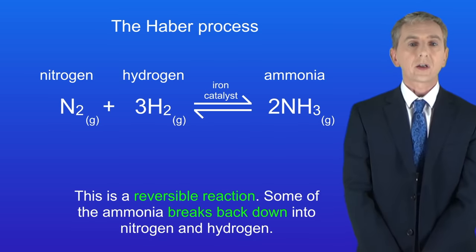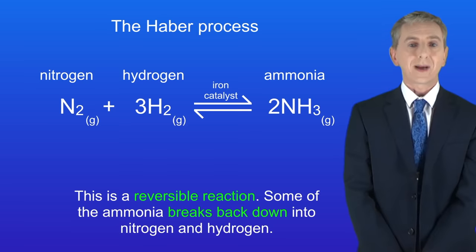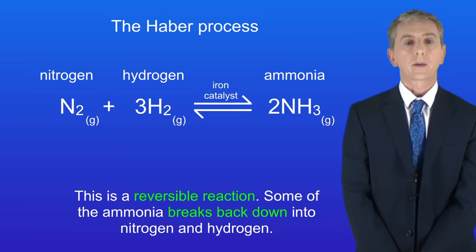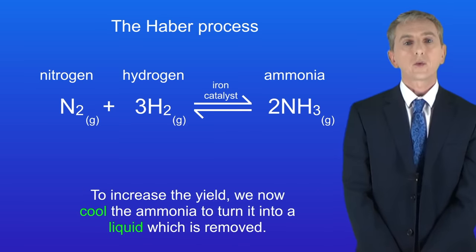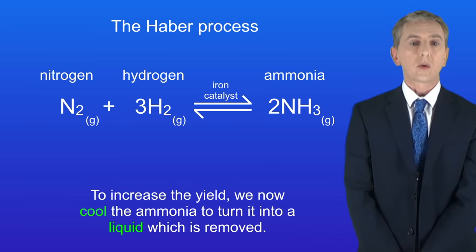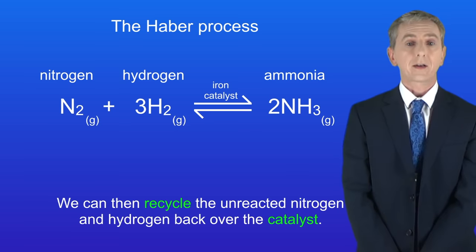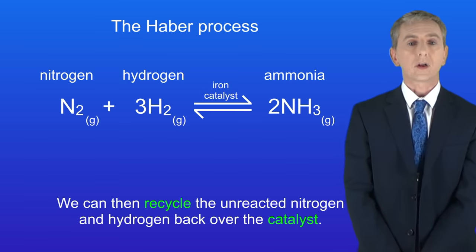However, this is a reversible reaction, so some of the ammonia breaks back down into nitrogen and hydrogen. To increase the yield, we cool the ammonia so it turns into a liquid, which is then removed. We can then recycle the unreacted nitrogen and hydrogen back over the catalyst.